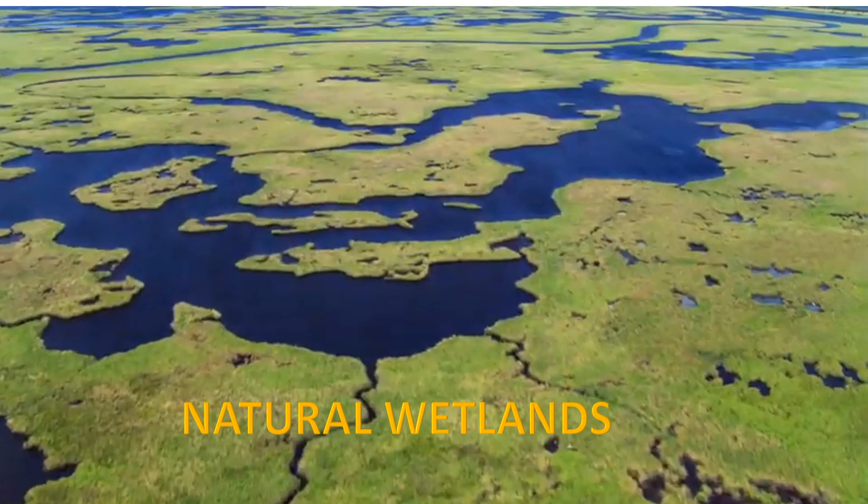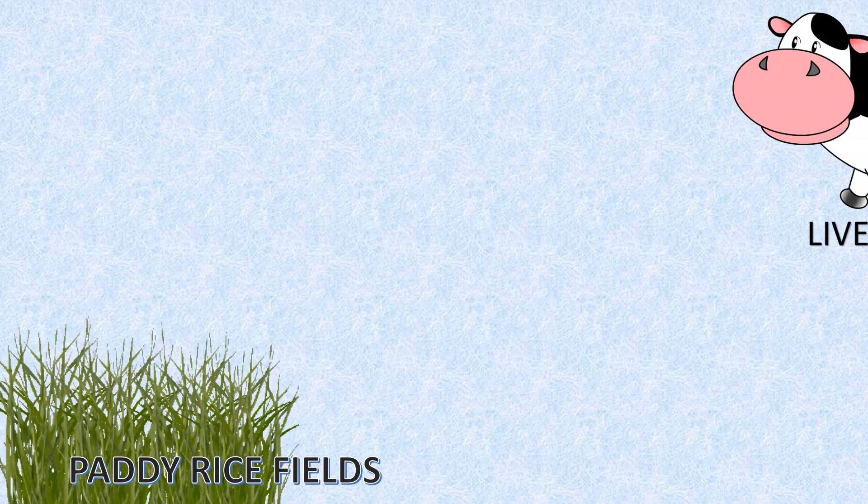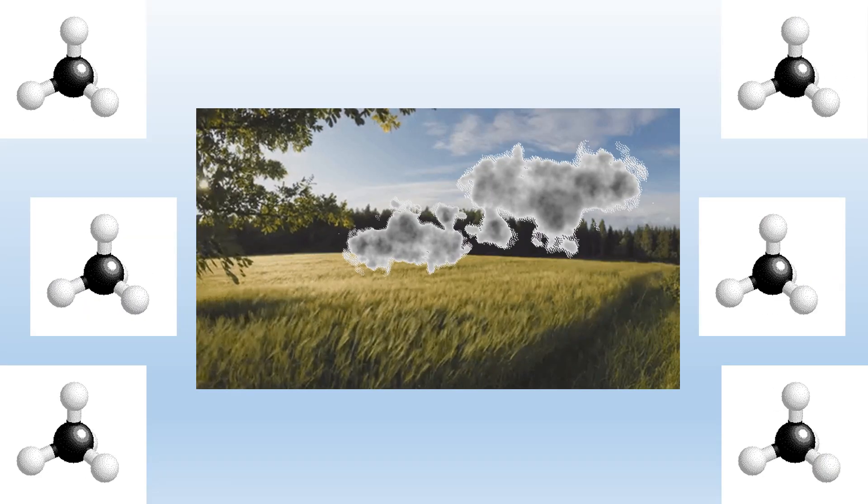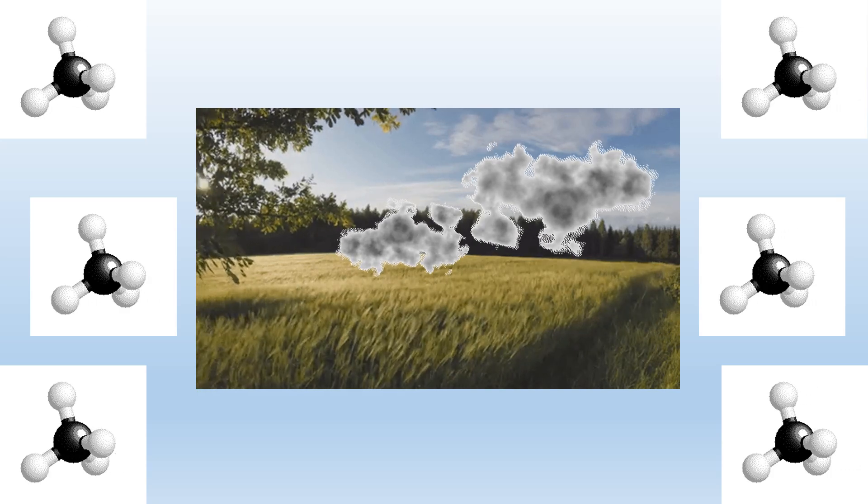Some of the major sources of methane are natural wetland, paddy rice field, livestock, biomass burning, decomposition of organic waste. Paddy field is a major contributor to atmospheric methane level.